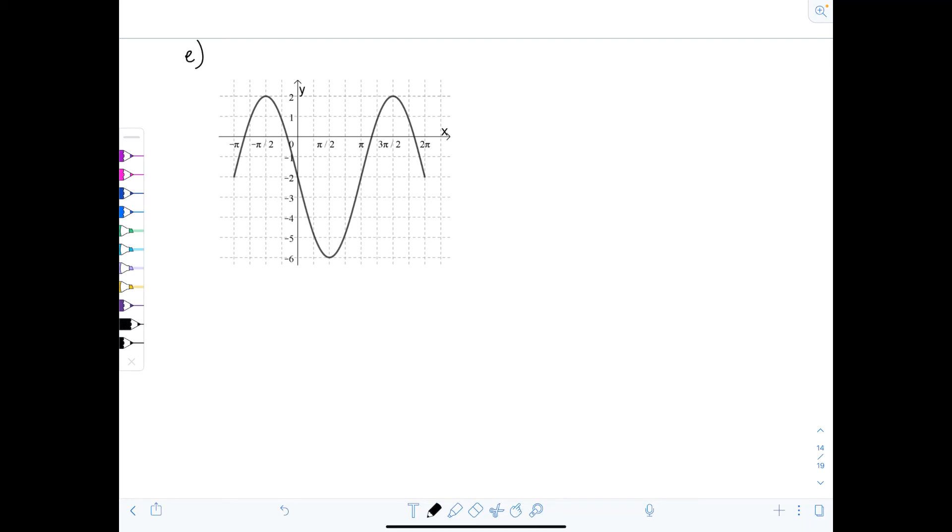So let's decide, do we want to represent this graph using sine or cosine? It goes up to 2 down to negative 6. That's important to notice first. So the difference between those two is 8, which means the amplitude is going to be 4. I still haven't decided if I'm doing sine or cosine.